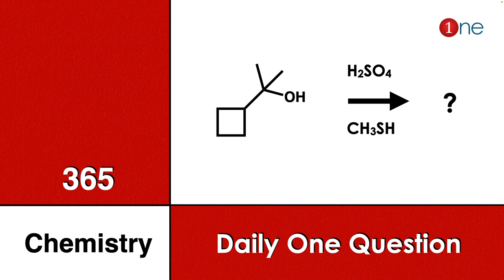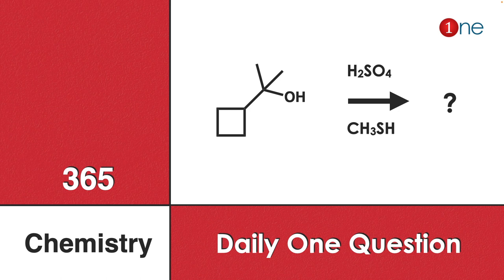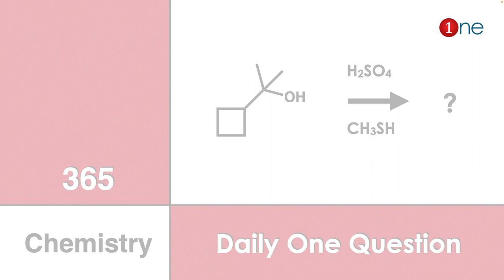Welcome to One Chemistry. This is the 365 Chemistry Series — one daily question for you. Here, cyclobutene with a methyl and alcohol side chain is reacting with sulfuric acid and methyl thiol. You have to find what will be the final product.